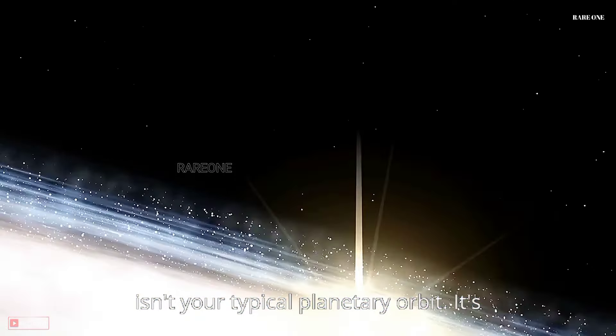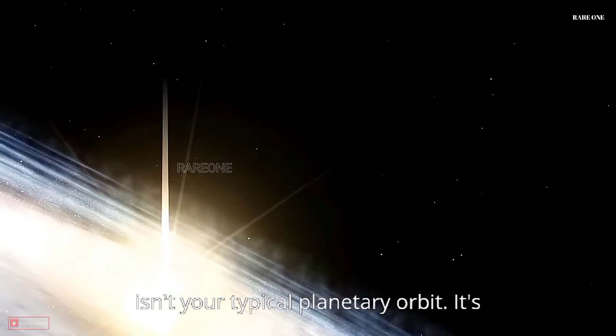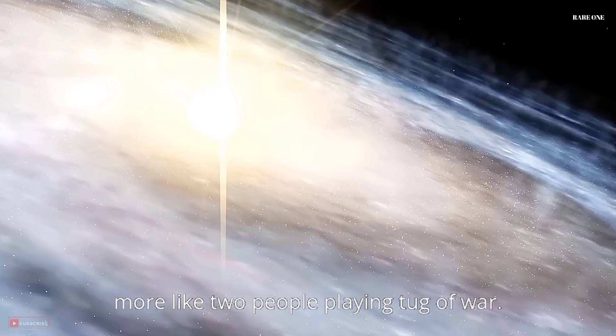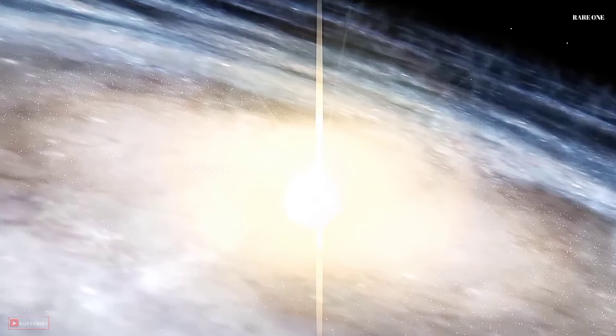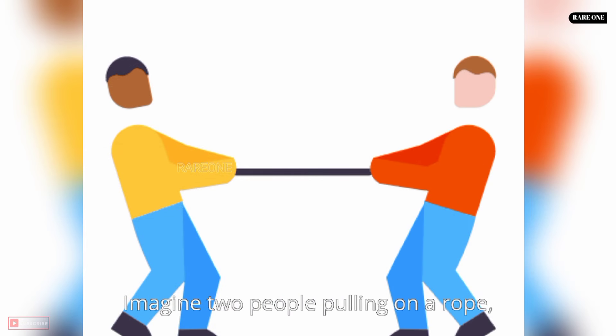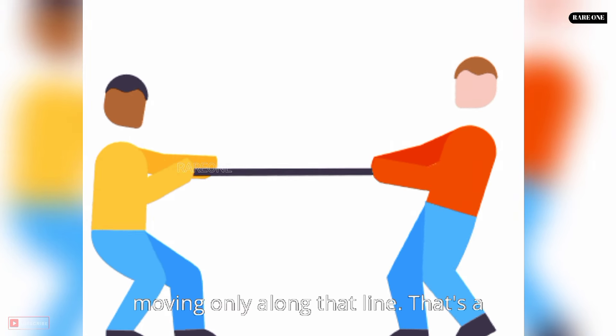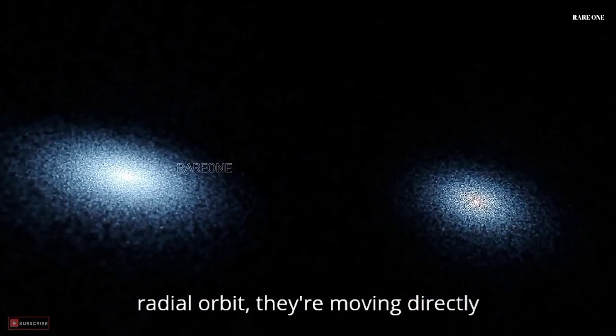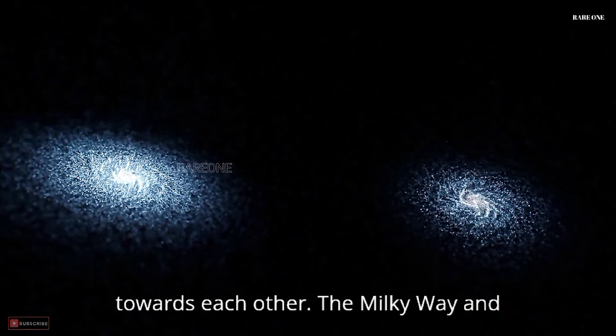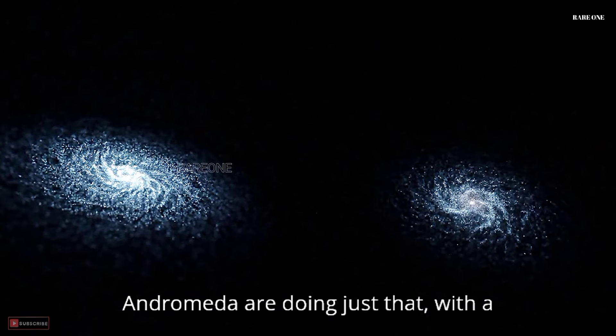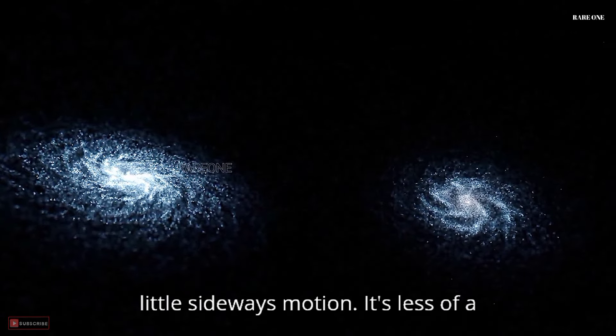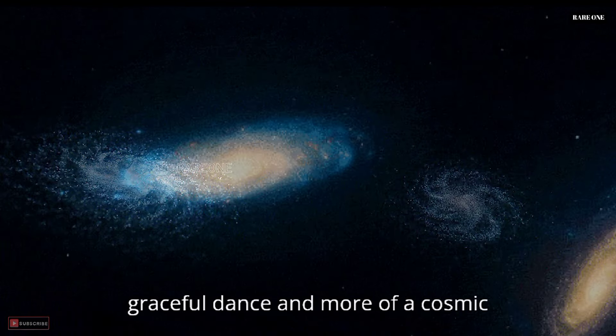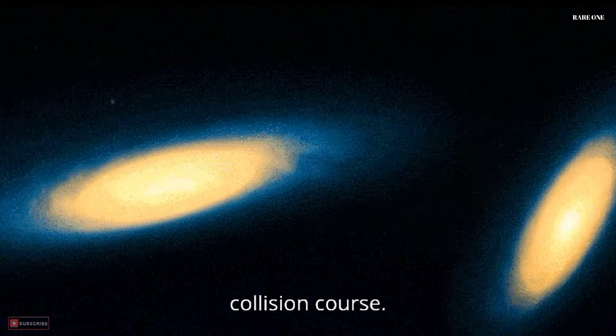But this isn't your typical planetary orbit. It's more like two people playing tug-of-war. Imagine two people pulling on a rope, moving only along that line. That's a radial orbit. They're moving directly towards each other. The Milky Way and Andromeda are doing just that, with a little sideways motion. It's less of a graceful dance and more of a cosmic collision course.